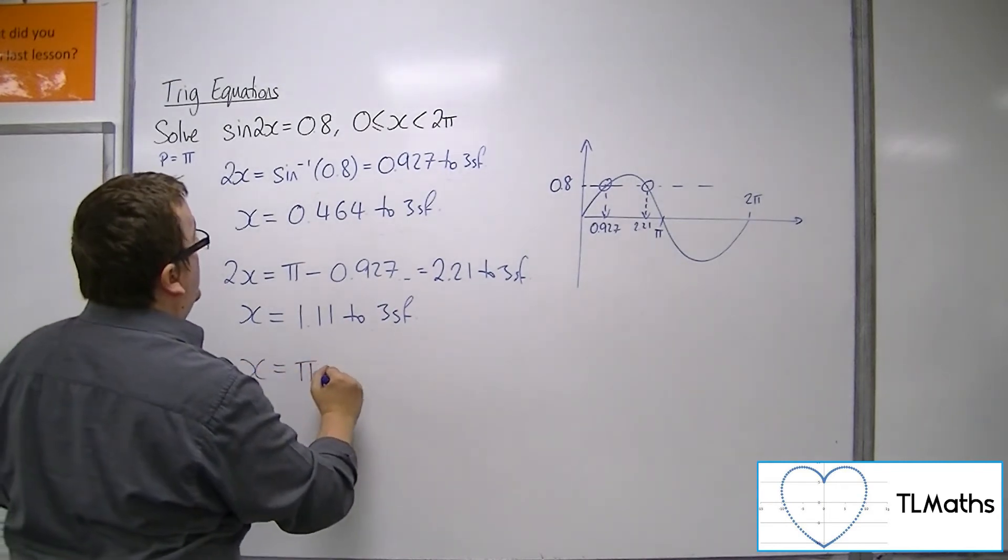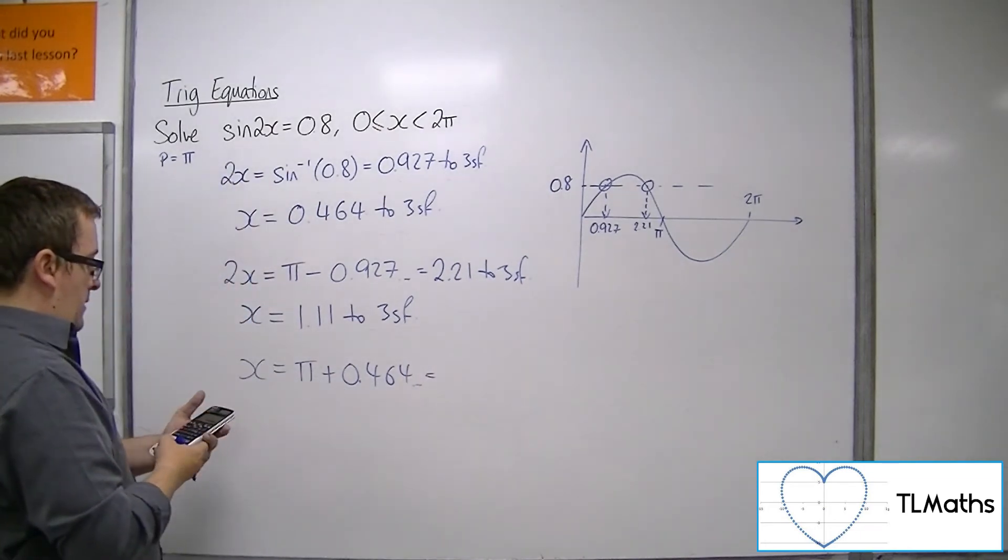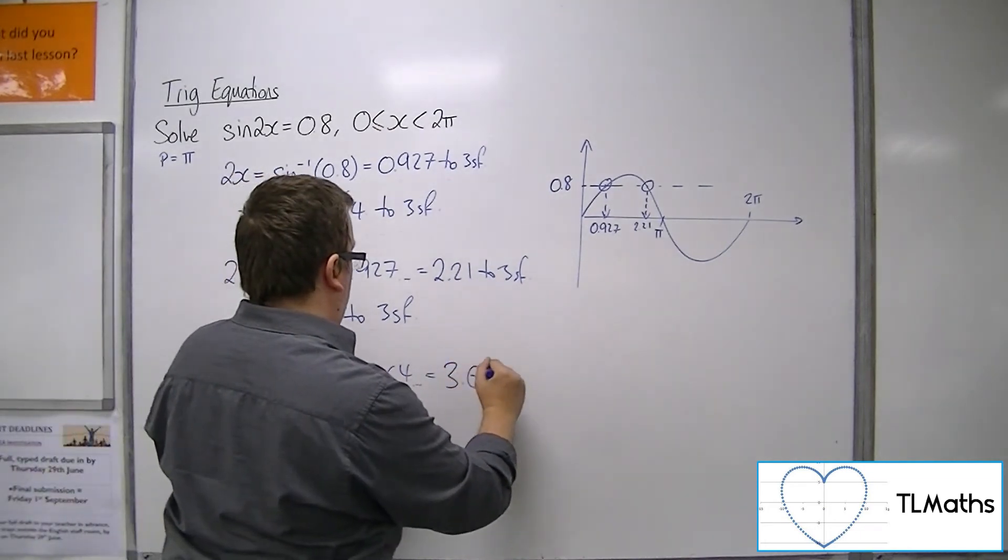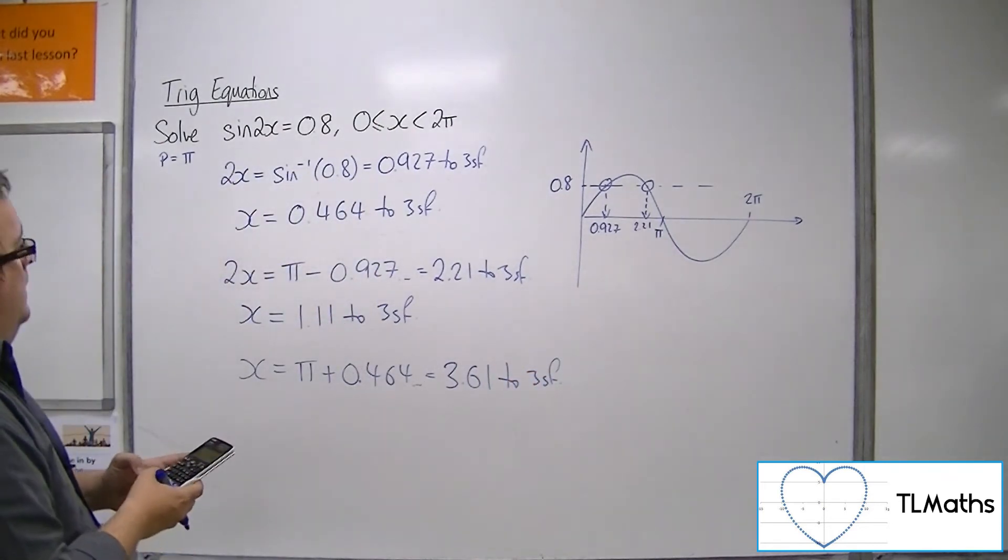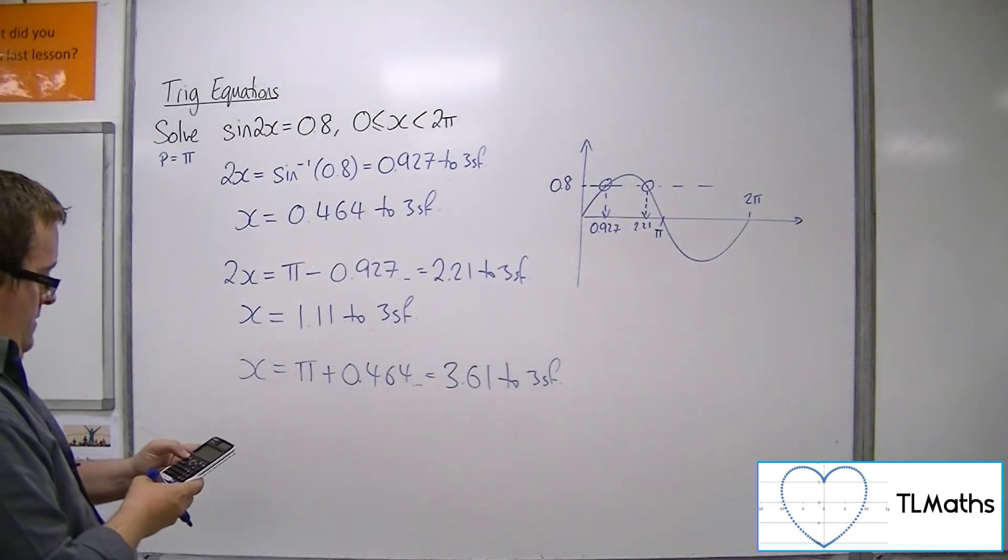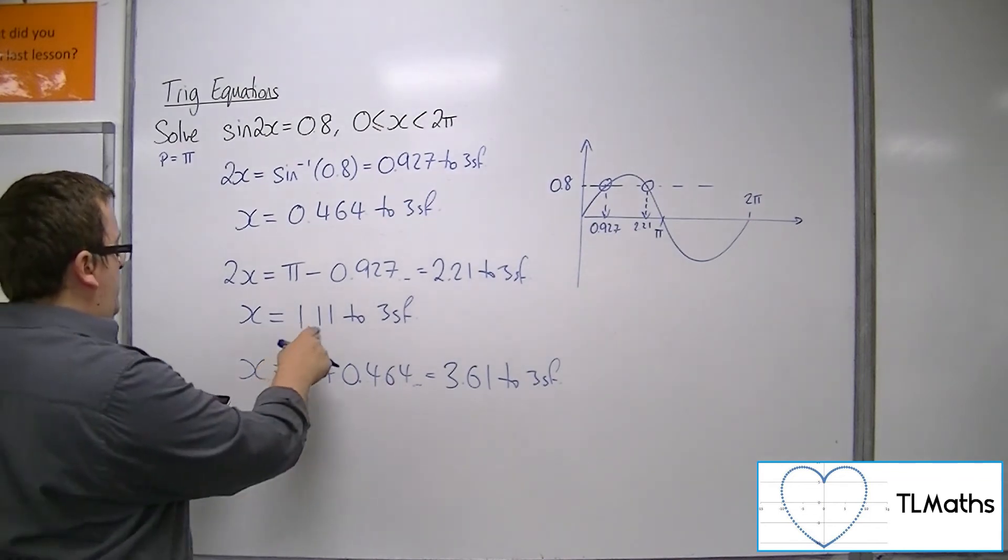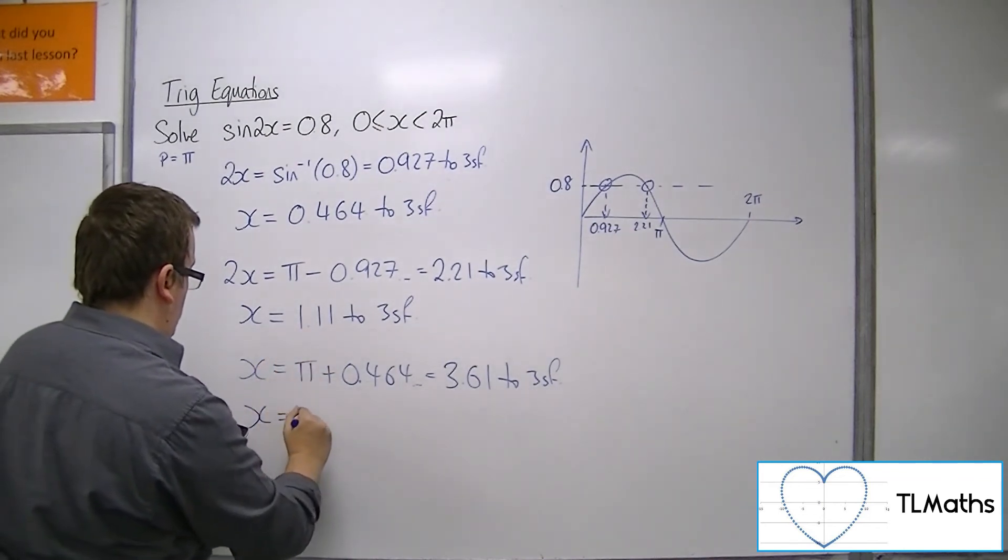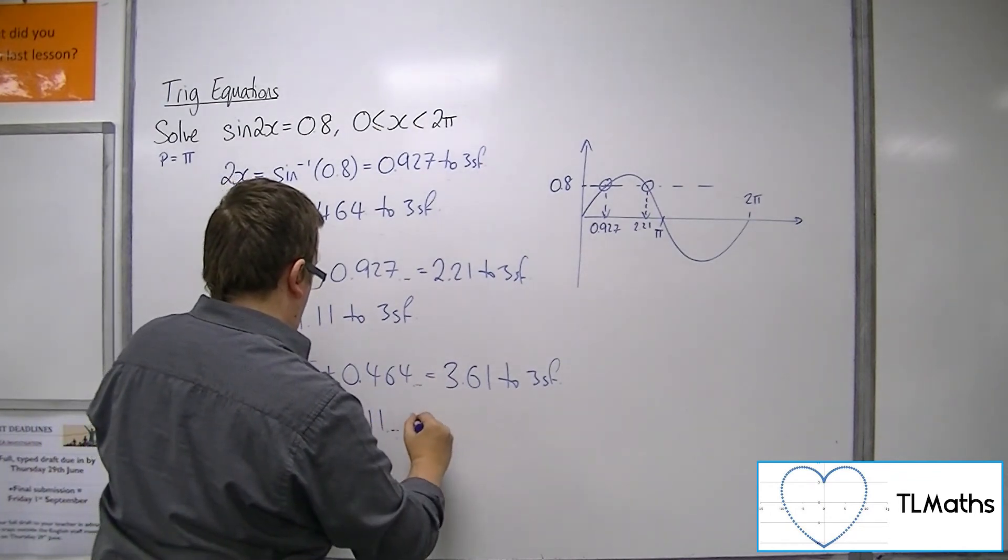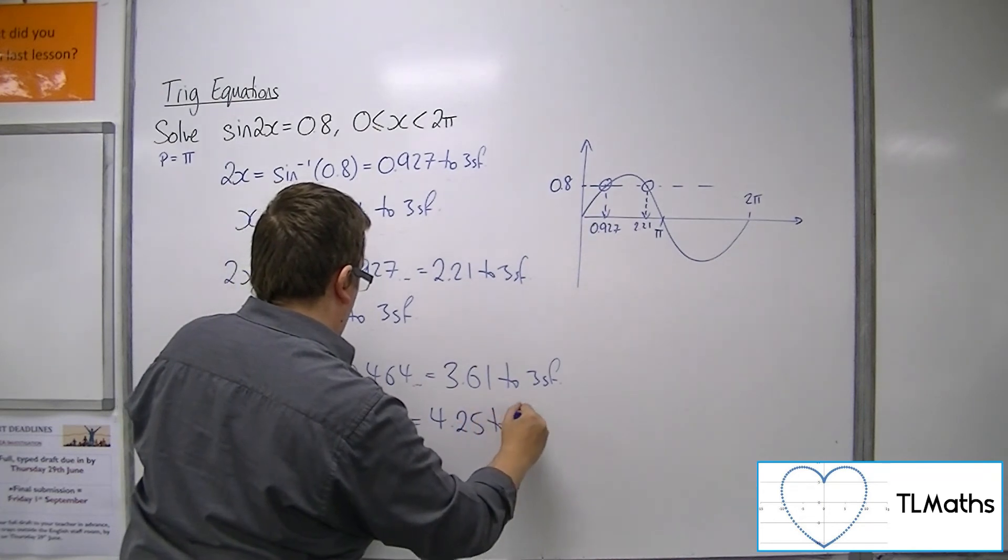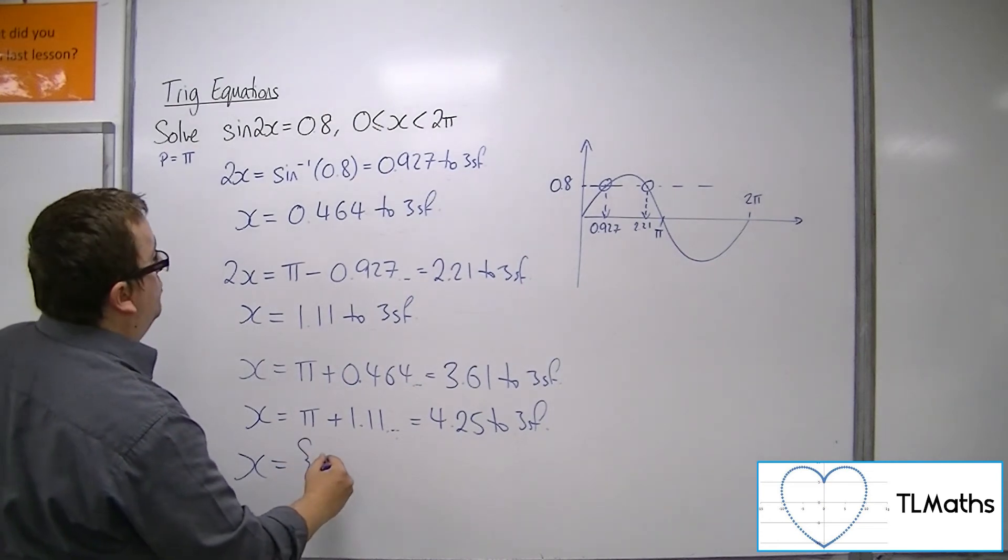So π plus 0.464 gets me 3.61 to 3 sig fig. And then adding π to that is 4.25 to 3 sig fig. So I have four solutions to the original problem.